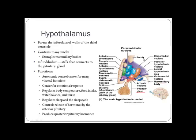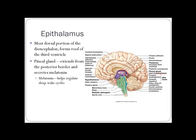The hypothalamus has many nuclei and controls autonomic functions of many organs. It contains homeostatic mechanisms for temperature, food intake, water balance, thirst, and the sleep cycle. It releases hormones to control the anterior pituitary gland via a stalk called the infundibulum. The epithalamus is the most dorsal portion of the diencephalon and has a pineal gland that produces melatonin to regulate the circadian rhythm and sleep cycle.